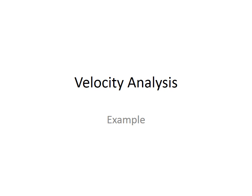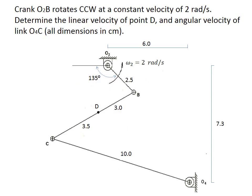This example shows how to determine the velocity of a point in a mechanism using the method of the velocity image. The mechanism shown is a 4-bar linkage, and link 2 has a constant angular velocity of 2 radians per second counterclockwise. We want to determine the linear velocity of points B and D, and also the angular velocity of link O4C, or link 4. All dimensions used for drawing the velocity image are shown here and are all in centimeters.